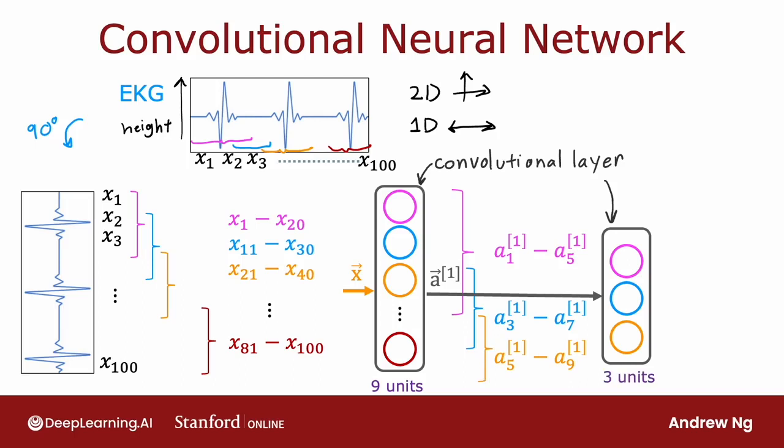And then maybe finally, these activations, a2, gets input to a sigmoid unit that does look at all three of these values of a2 in order to make a binary classification regarding presence or absence of heart disease. So this is an example of a neural network with the first hidden layer being a convolutional layer, the second hidden layer also being a convolutional layer, and then the output layer being a sigmoid layer.